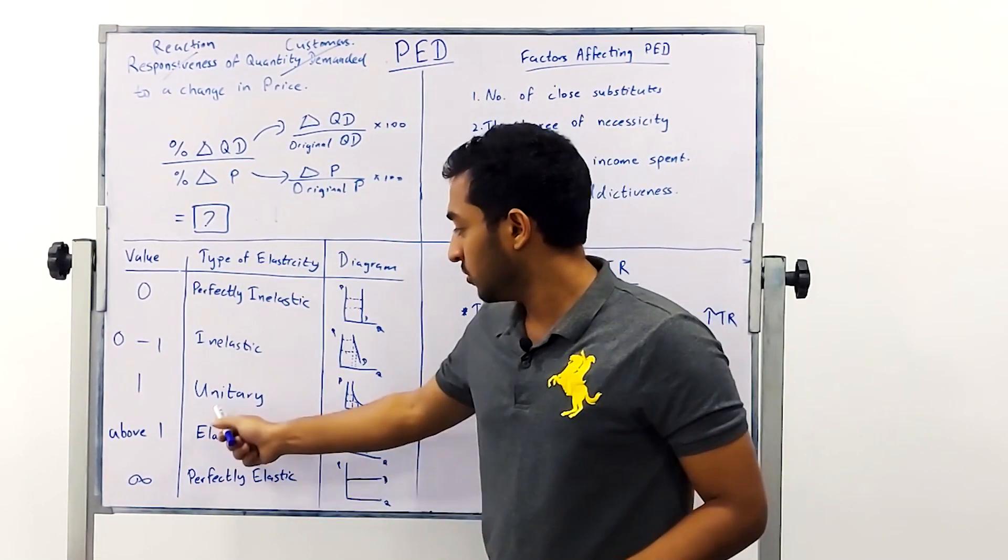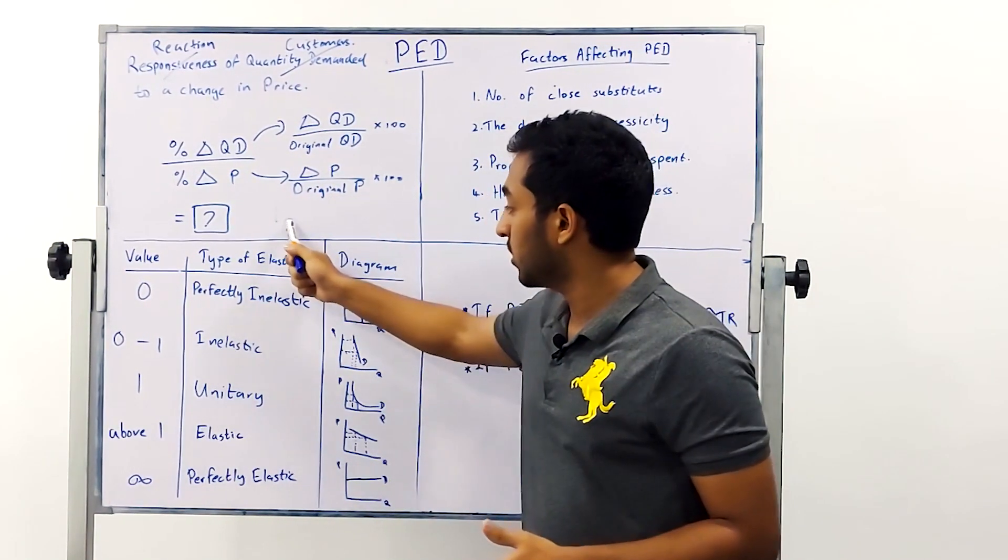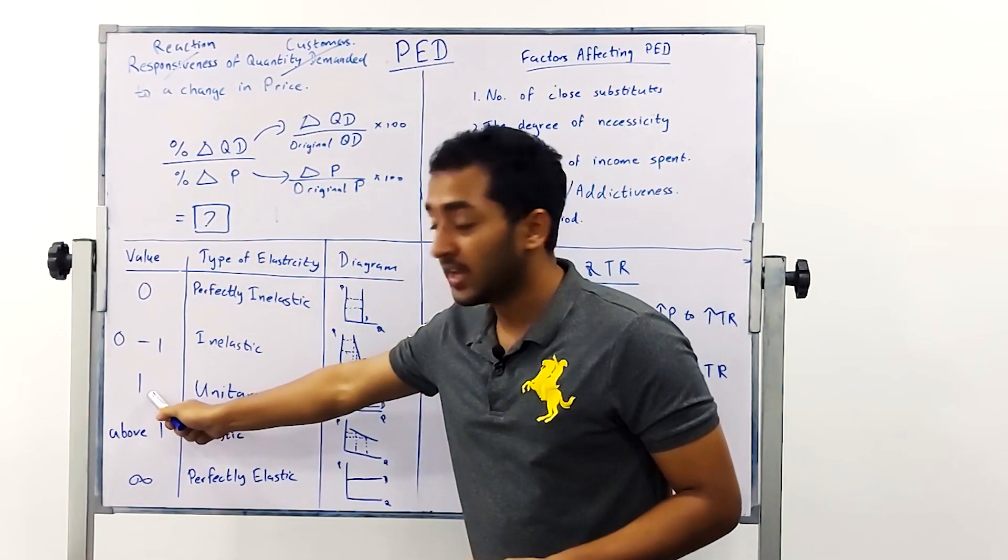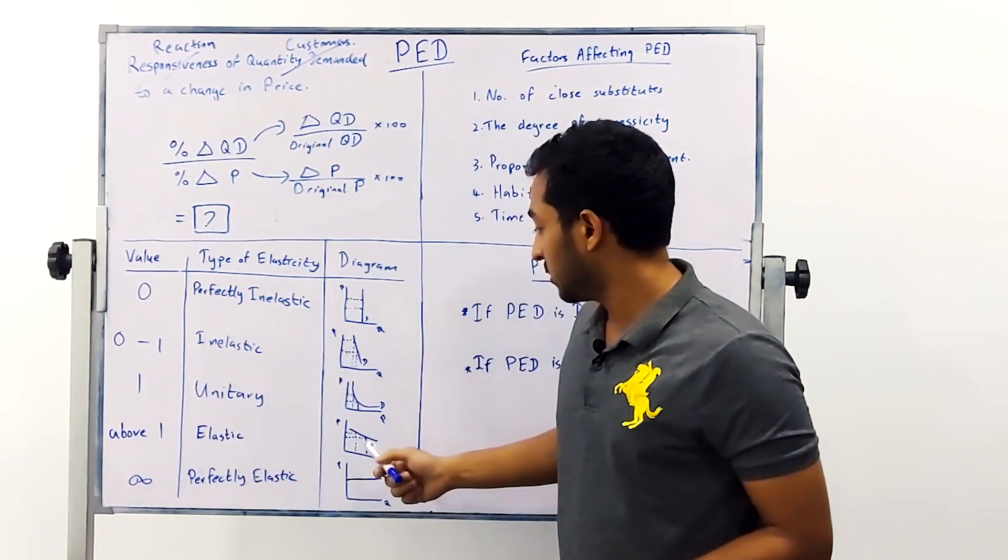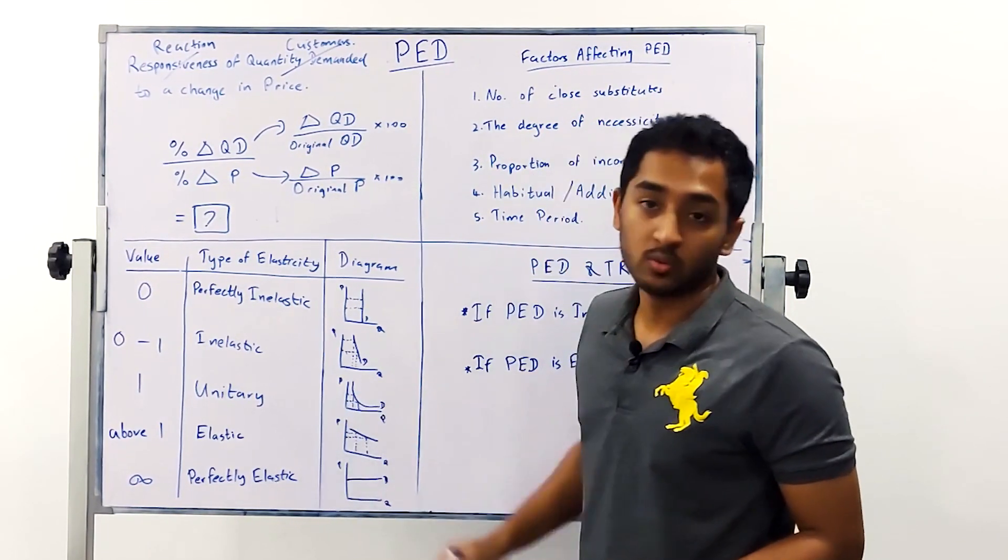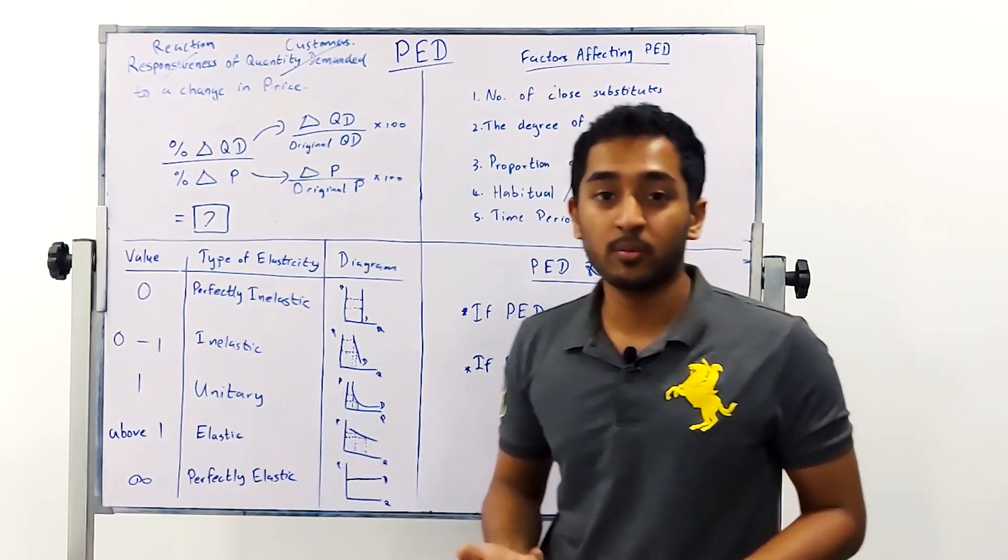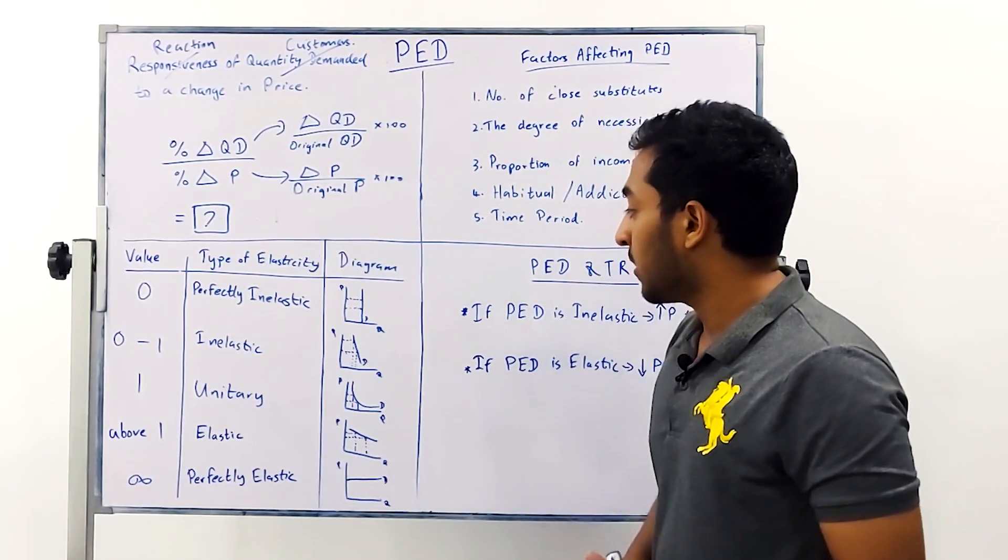The next category is unitary. This again is a theoretical concept. If you change your price by one percent an exact proportion of customers leave you of one percent which is why the diagram looks like this. A one percent change here will lead to a one percent change here or rather a proportionate change in your change of price.